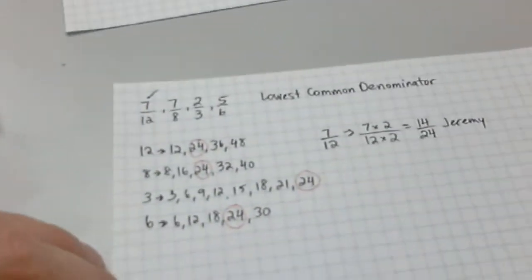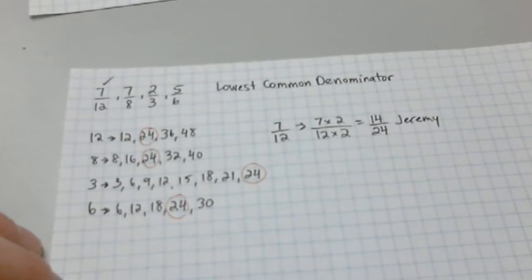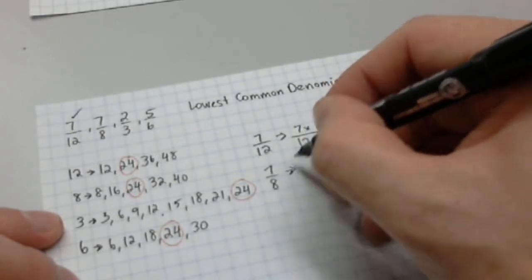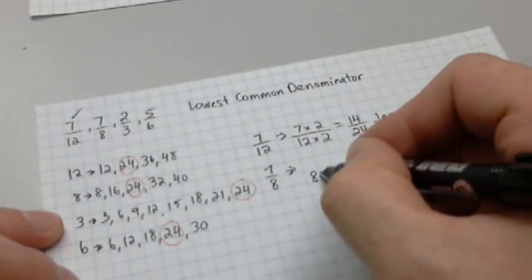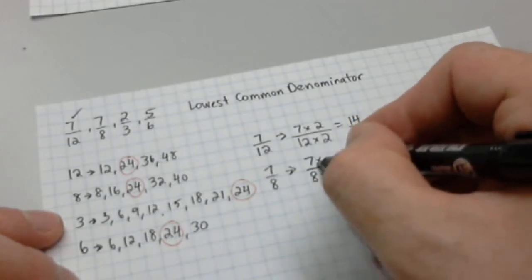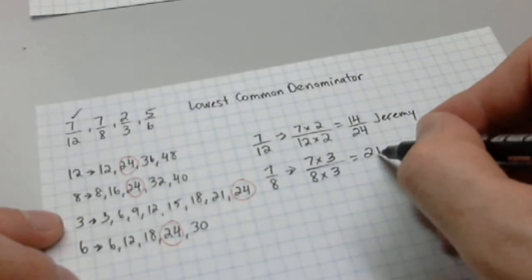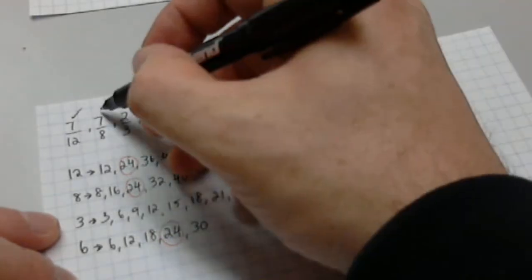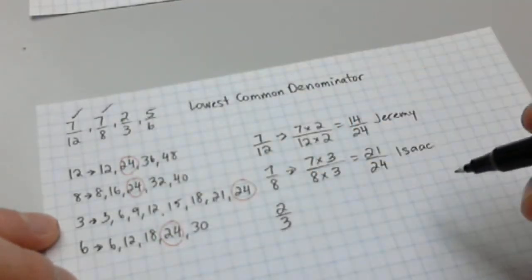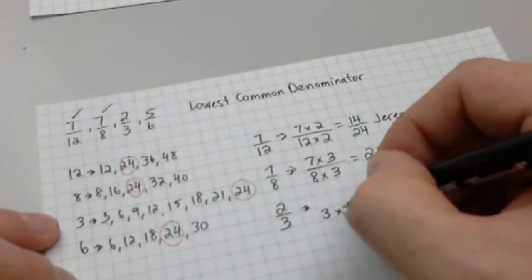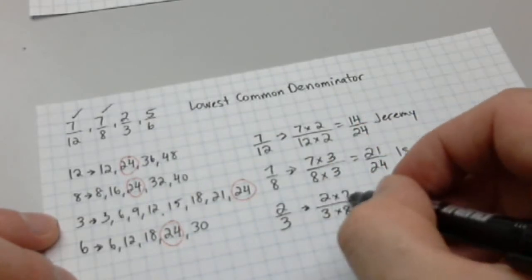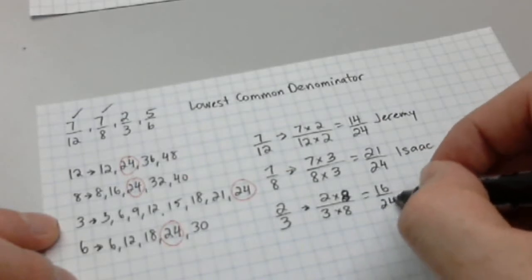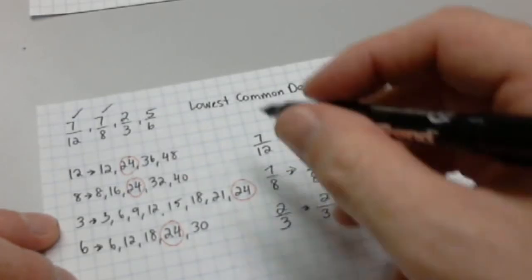So, that one's done. On to 7/8, which is how much Isaac has done. To get from 8 to 24, I have to multiply 8 times 3. And, again, top and bottom need to be multiplied by the same number. So, 7 times 3 is 21. Denominator is 24. This is how much Isaac has done. Then, Jesse having 2/3 done. I want to get from 3 to 24. It's 3 times 8. Which means it's 2 times 8. So, I get 16 over 24 for Jesse.